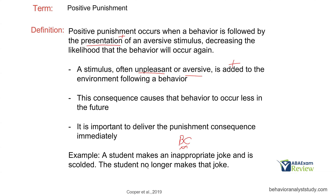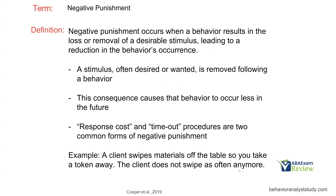A student makes an inappropriate joke and is scolded, and the student no longer makes the joke. The behavior is making the joke, scolding is the consequence, and the joking behavior decreases — that's positive punishment, pretty clearly.